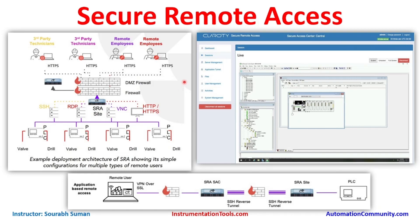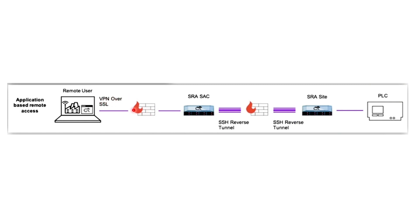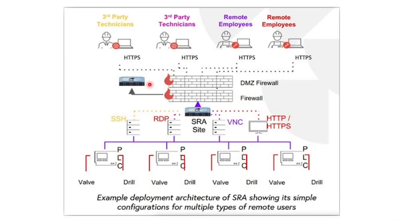Here we can see a solution for secure remote access from Clarity. In this architecture, a remote user opens an application, which sets up a VPN communication from the firewall using browser SSL functionality. This connects to a secure remote access server at the site, and an SSH reverse tunnel is extended to the SRA site. From there, the user can access PLCs. The deployment supports multiple PLCs with SSH, RDP, VNC, and HTTP communications, all enabled through the secure remote access server.